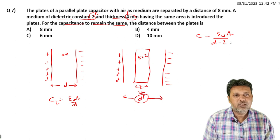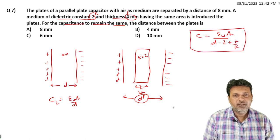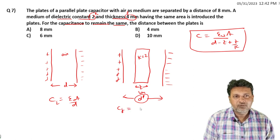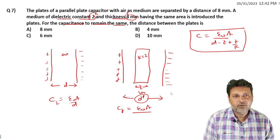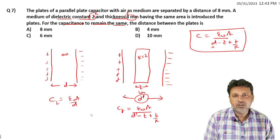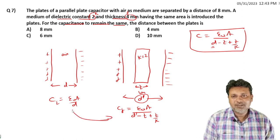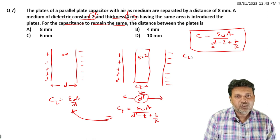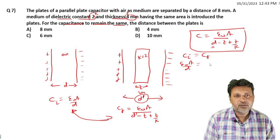D minus T plus T by K. This is the situation. Epsilon not A upon D is the capacitance. The new distance is D dash which equals D minus T plus T by K. Epsilon not A by D equals epsilon not A by D dash, which is D minus T plus T by K.